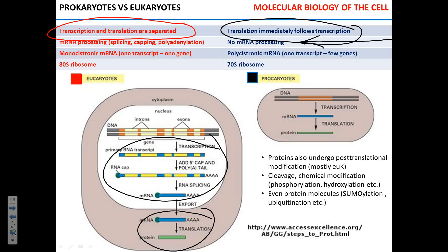To the contrary, in eukaryotes, mRNA has to be massively processed. First, it has to be spliced — introns have to be cut out and exons have to be stitched together. Second, mRNA in eukaryotes has to get the poly-A tail to be successfully transported from the nucleus, and it's got to have a cap structure — the RNA is capped. The function of the 5' cap on eukaryotic mRNA is that it's a binding signal for the ribosomes to start translation.